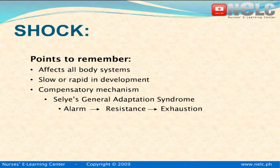To easily remember the processes of shock, always remember that shock affects all body systems if left untreated. Development may be rapid or slow, depending on the underlying condition. The body's compensatory mechanism is triggered in response to the stress. In the case of shock, decreased tissue perfusion is the stressor, and the affected person would manifest Selye's adaptation syndrome. This starts with alarm response, wherein the body recognizes the stress, then progresses to resistance, in which the body resists the stressor, and then to exhaustion, wherein the body finally succumbs to the stressor. The stage of exhaustion could be prevented if ample treatment is initiated and the stress is alleviated.